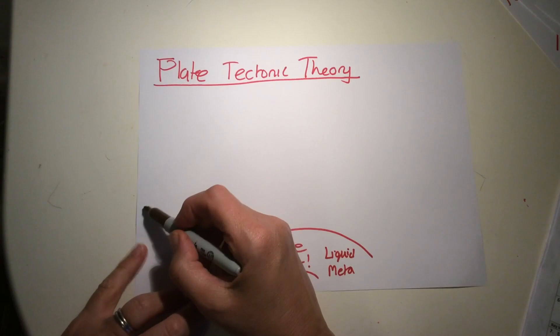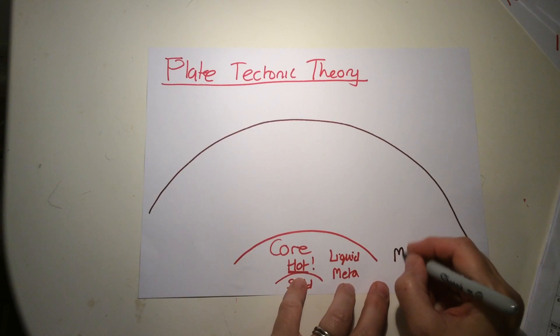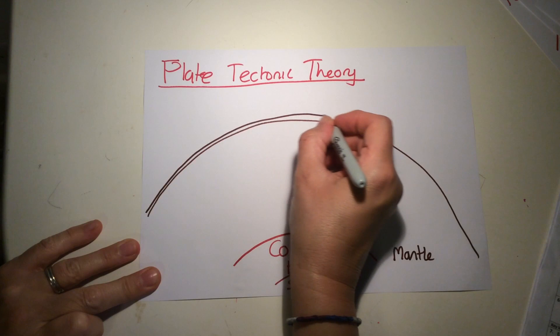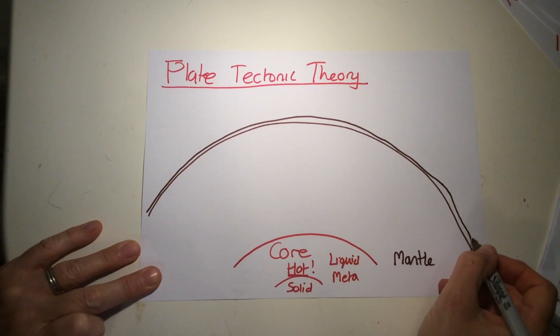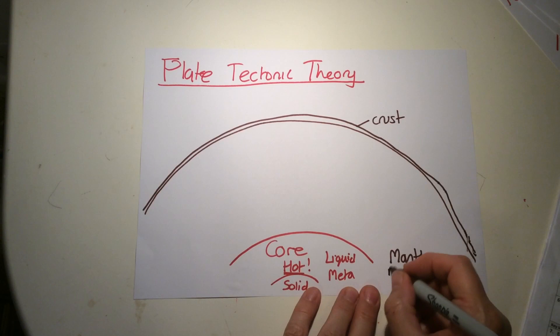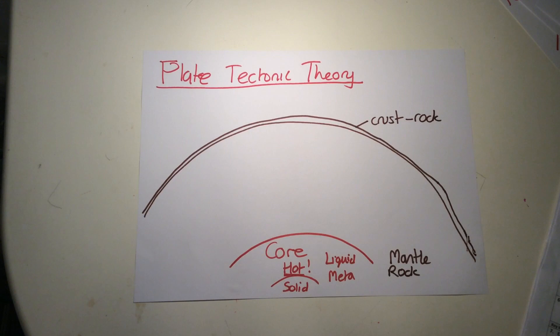If I draw this, this is the bulk of the Earth—that's the mantle. Then above that is a very, very thin layer which is the Earth's crust that we live on, up here.